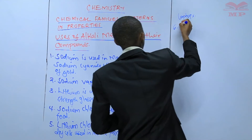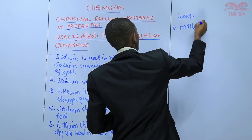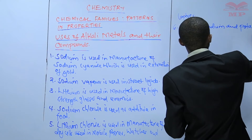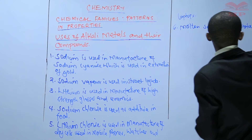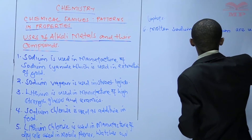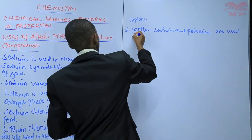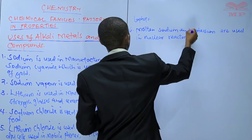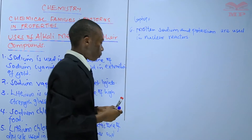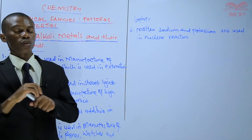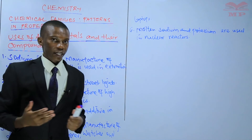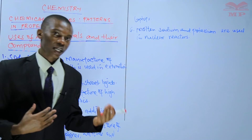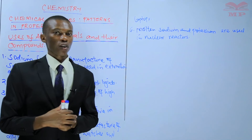Next, molten sodium and potassium are used in nuclear reactors. Those are some examples of the uses of alkali metals and their compounds. There are many others.